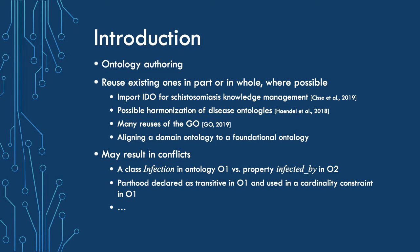Anyone who has tried this probably will have at least one story to tell about conflicts that have arisen. A typical example is representing some process either as a class or as a relation, such as 'infection' versus 'infected by,' and 'marriage' versus 'married to.' From the logic side, where each ontology on its own is neatly within AL2DL, but when you combine them it goes beyond AL2DL, so you need either to remove some axioms or set aside semantic web technology infrastructure.